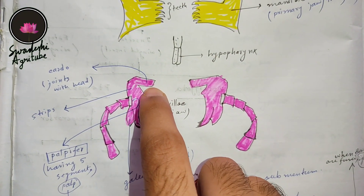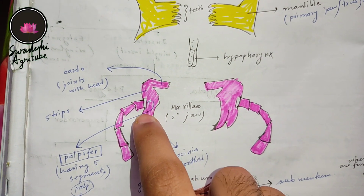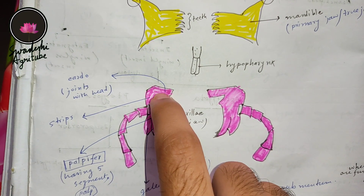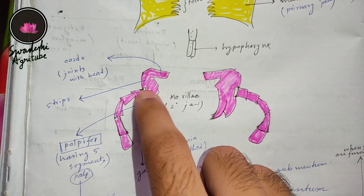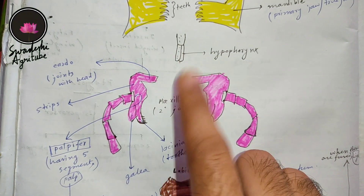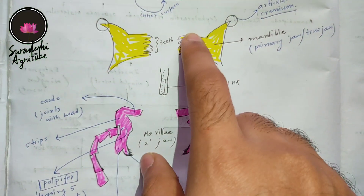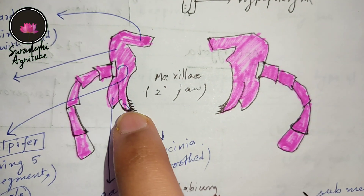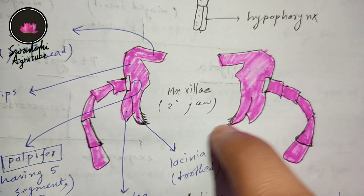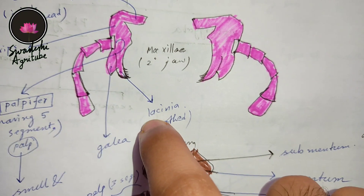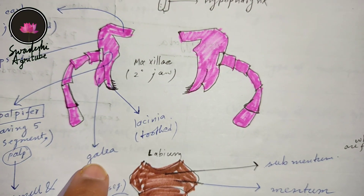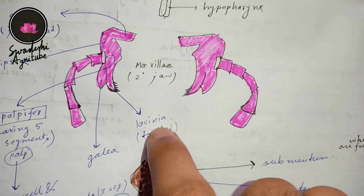Now the maxilla is a little more complex because it has three structures: cardo, stipes, and palpifer. The cardo articulates with the cranium. The palpifer has five segments, each segment called a palp. The maxilla is also called the secondary jaw, since the mandible is the primary jaw. You can see the inner teeth portion of the maxilla called lacinia, and the outer structure around it called galea. You have to remember one pair of lacinia and one pair of galea.